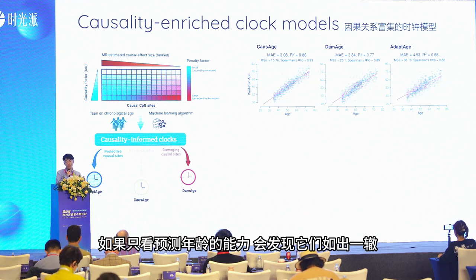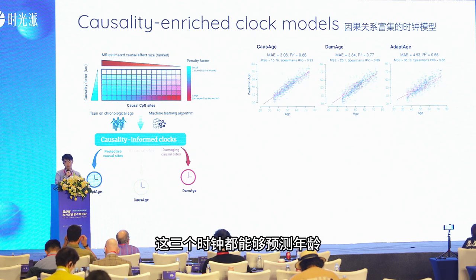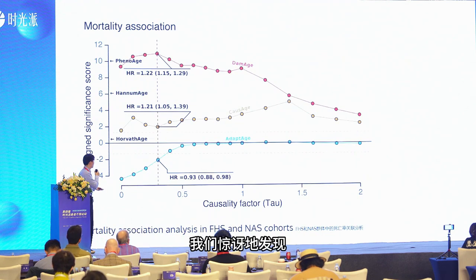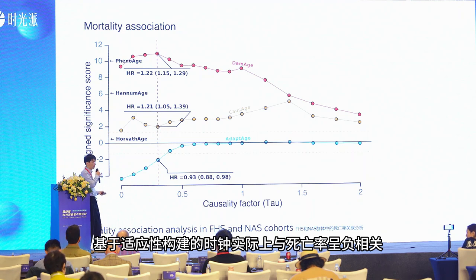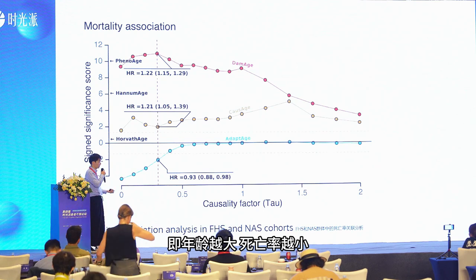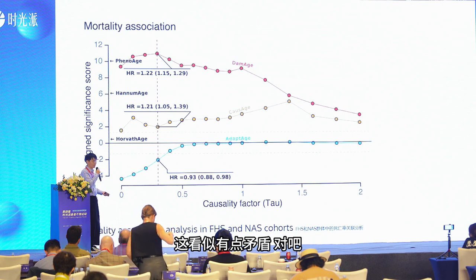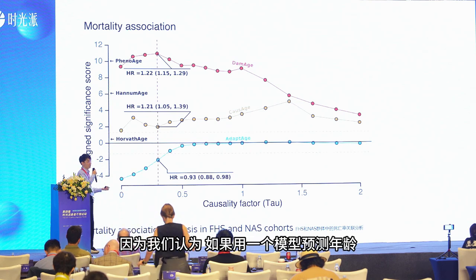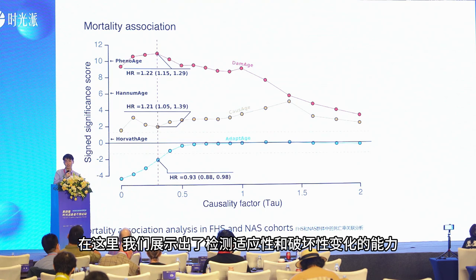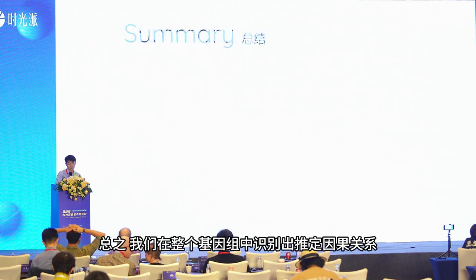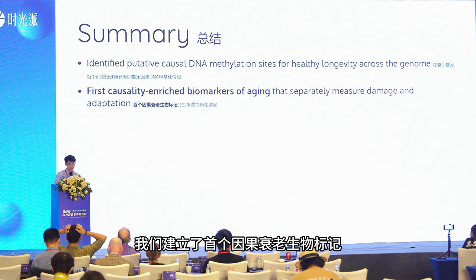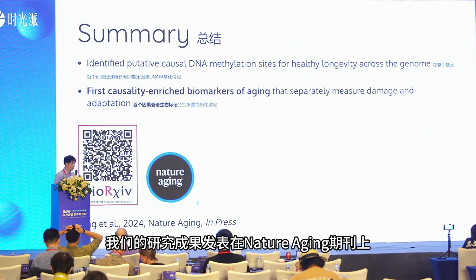If you just look at the ability to predict age, all three clocks perform quite similarly. But when we apply them to mortality association, we surprisingly find that the clock built on adaptive methylation actually has an inverse correlation with mortality — meaning higher predicted age actually means less likelihood of dying. This seems contradictory, but it really shows we're able to separate adaptive from damaging changes. In summary, we identified putative causal methylation sites across the genome and built the first causal-enriched biomarker. Our work is currently under review at Nature Aging.